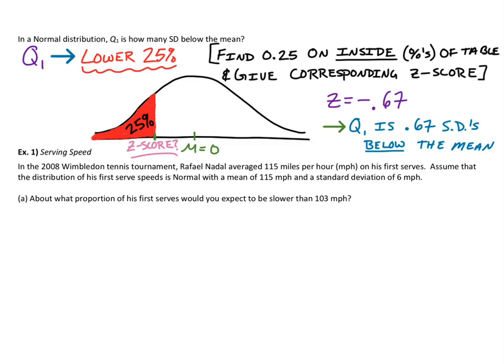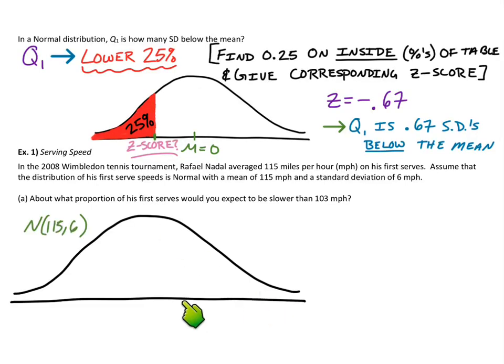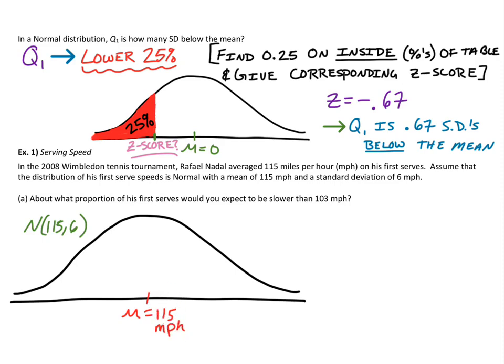A general rule of thumb: anytime you see a problem that mentions anything about a normal distribution, the very first thing we want to do is make a nice sketch and properly label it. For our normal curve, this distribution is normal with a mean of 115 and a standard deviation of six. Let's put a marker smack dab in the middle for the mean at 115 miles per hour.